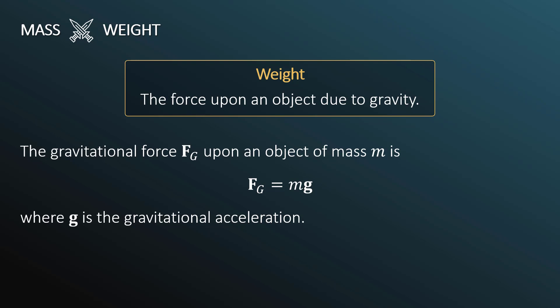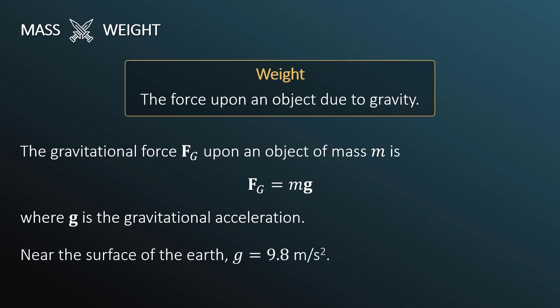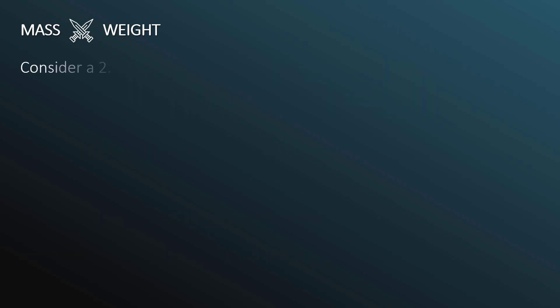This lowercase g is also known as the gravitational field. The value of the gravitational field near the surface of the Earth is roughly 9.8 meters per second squared. In the textbook Conceptual Physics, for simplicity of calculations, this value is rounded up to 10 meters per second squared.